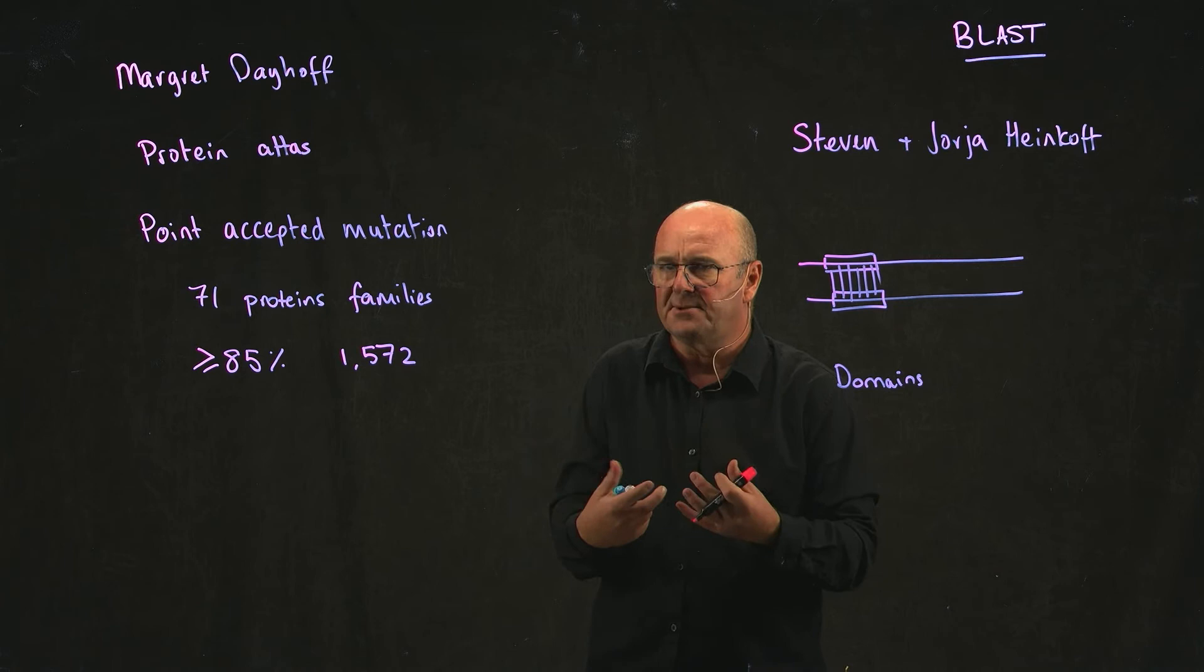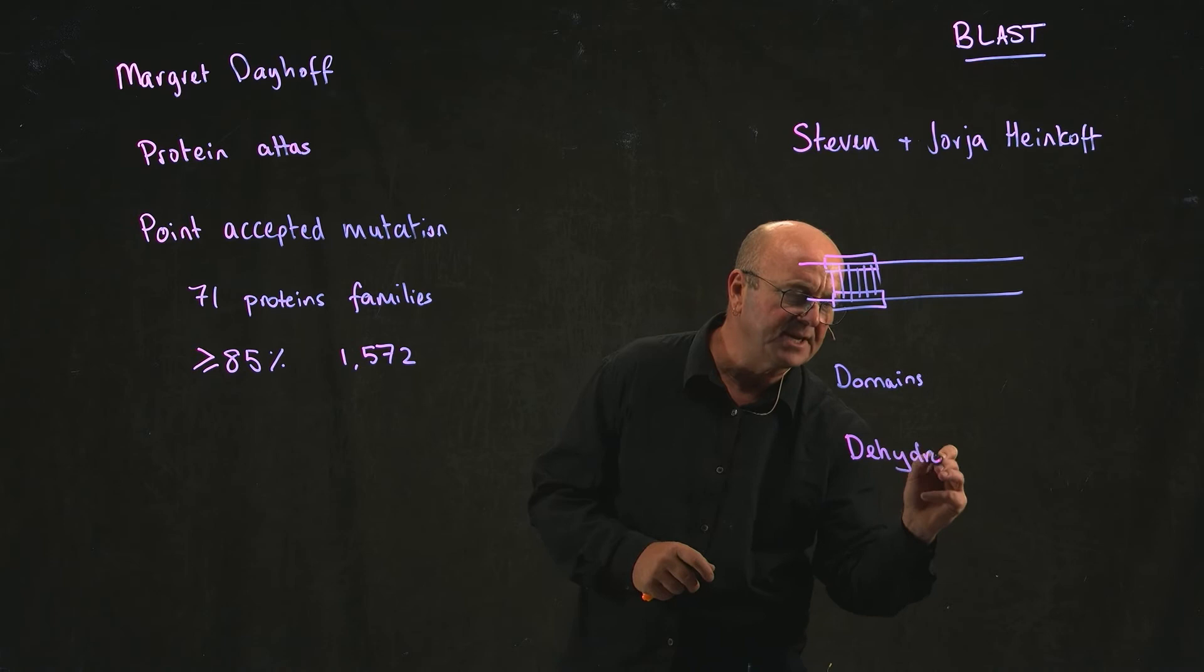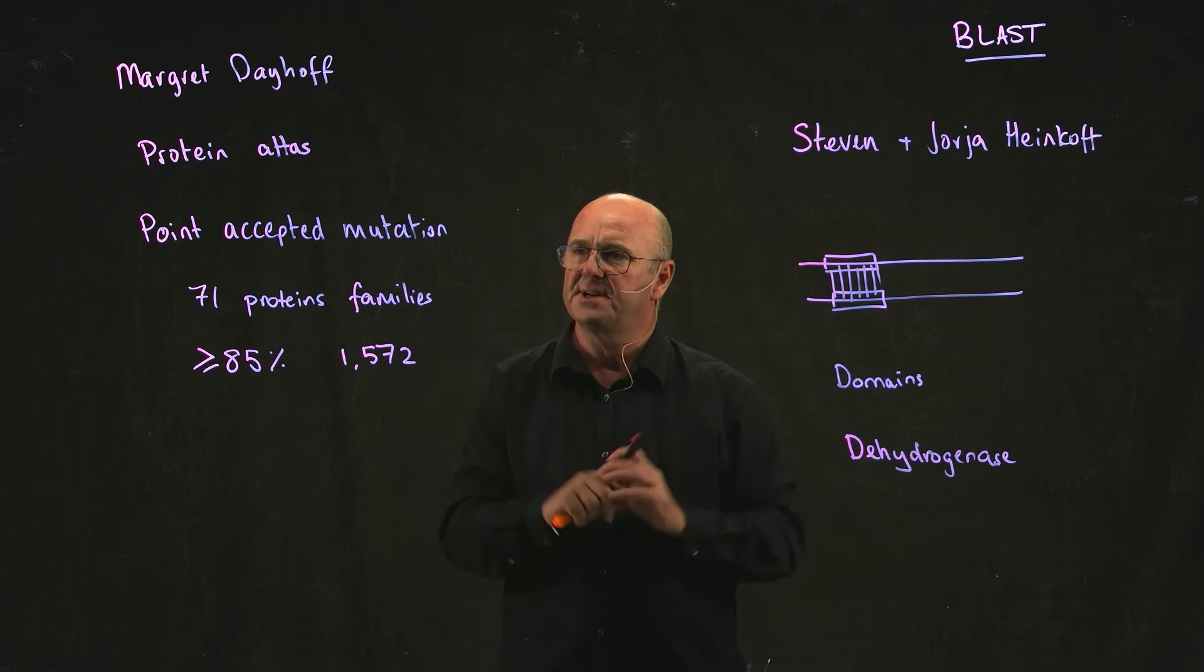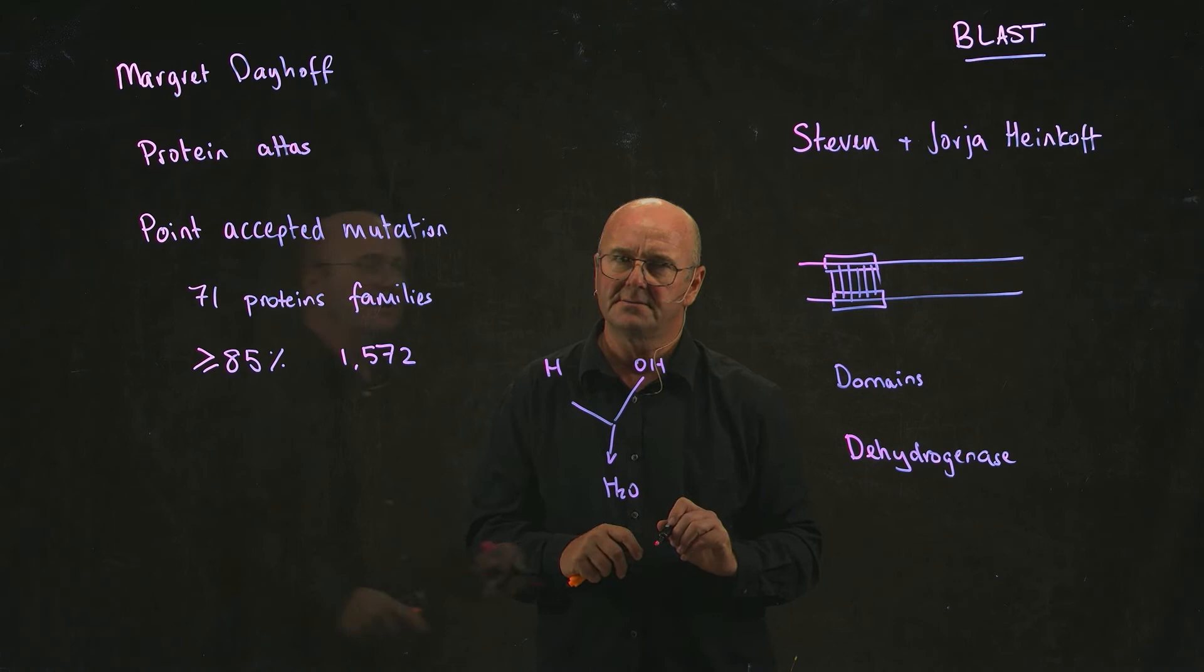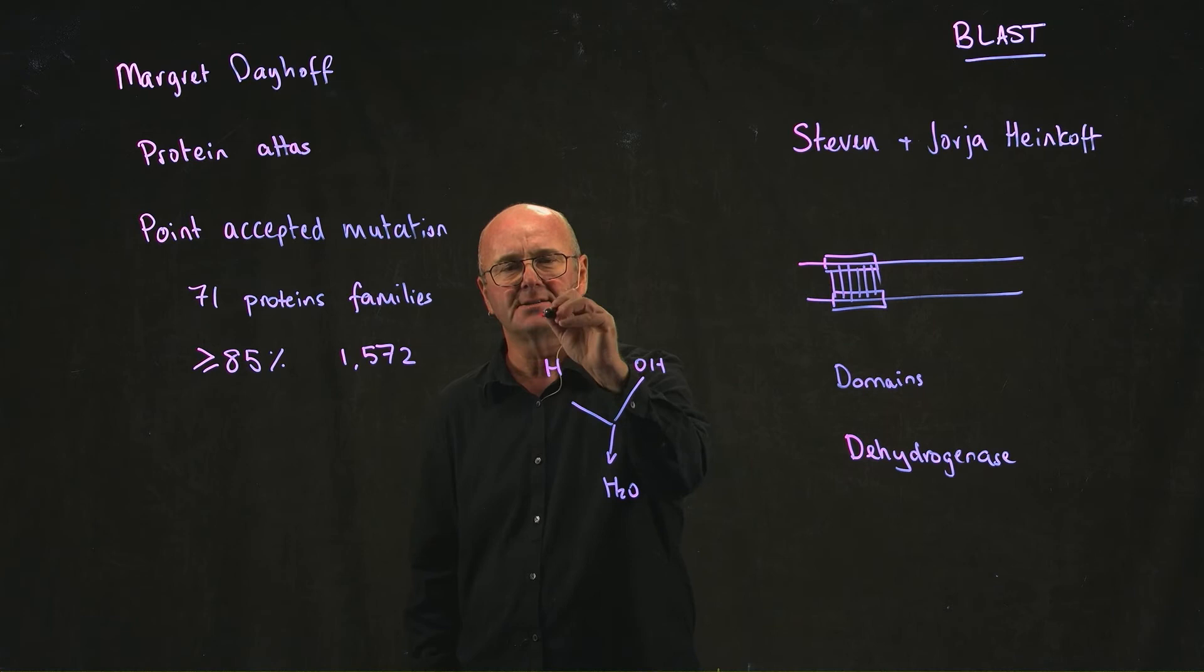For example, one very common domain is called a dehydrogenase. What that means is that you're taking, you've got two chemical compounds like those two that I just drew, and one has an H, and one has an OH, H, and you take those away, and you get H2O.